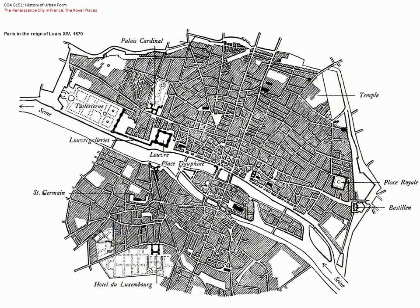It wasn't a smooth transition — there were periods of riots and revolutions that were squelched. The succession goes from Henry IV to his son Louis XIII, from Louis XIII to Louis XIV, from Louis XIV to Louis XV, and then Louis XVI, who got his head cut off with the Revolution of 1789 — the French Revolution that ended the monarchy as a form of government in France. It took 50 years to get rid of it completely.